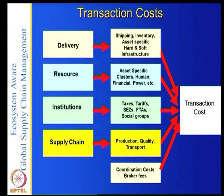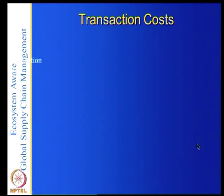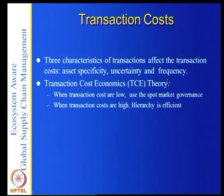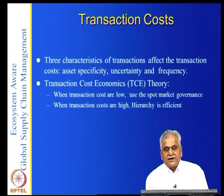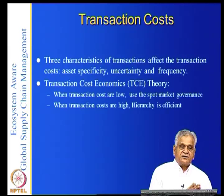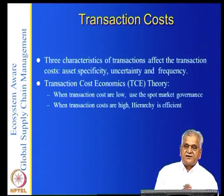Three characteristics of transaction cost affect the relationship: asset specificity, uncertainty, and frequency. Transaction cost economics theory says: when transaction costs are low, use of the spot market is efficient; when transaction costs are high, hierarchy — doing it yourself — is efficient. When transaction costs are low, you outsource. In the supply chain formation stage, we look at all the transaction costs and find out for each component which supplier has the lowest transaction cost — considering not only cost but also innovations and risks.